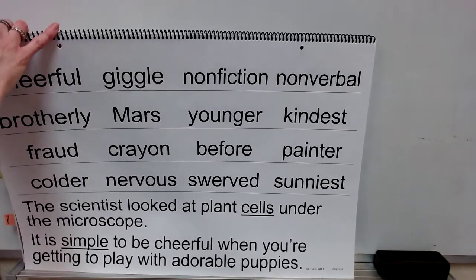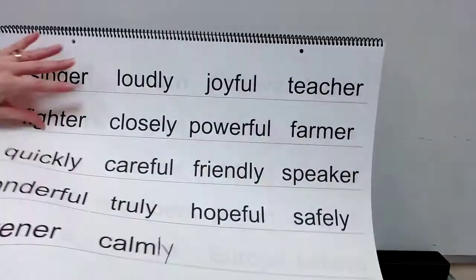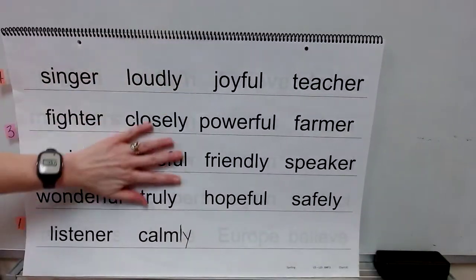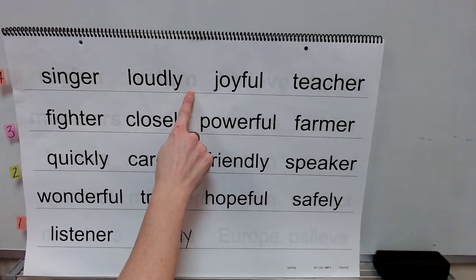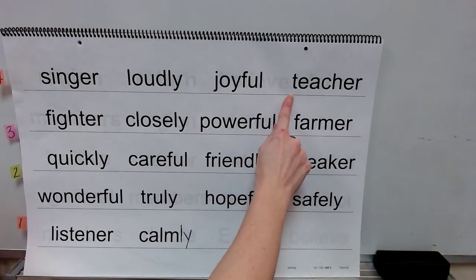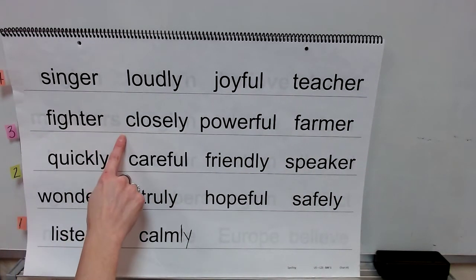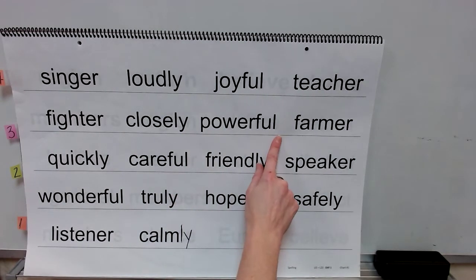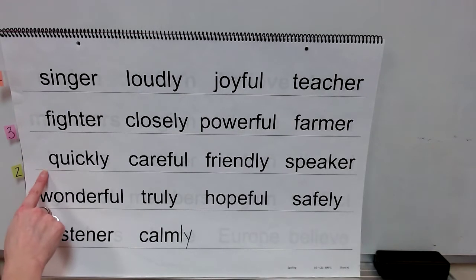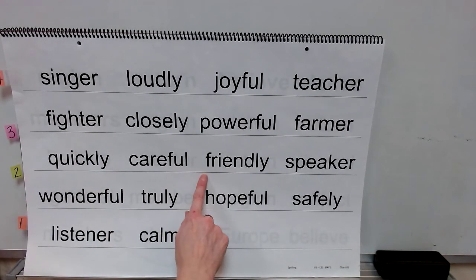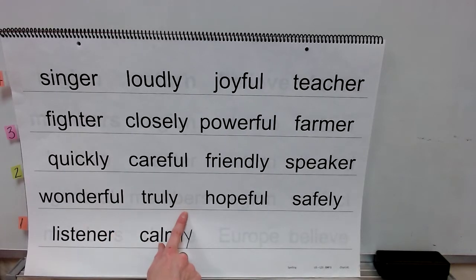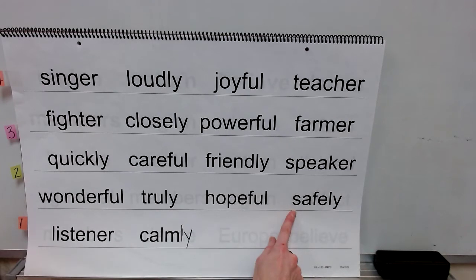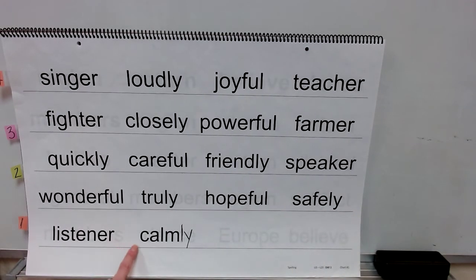Now pause the video to get your supplies ready to practice your spelling. We have base words with suffixes this week. Let's read your words: singer, loudly, joyful, teacher, fighter, closely, powerful, friendly, speaker, wonderful, truly, hopeful, safely, listener, calmly.